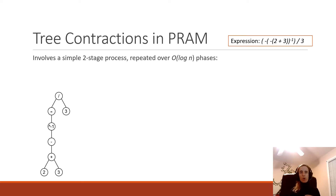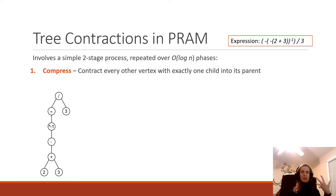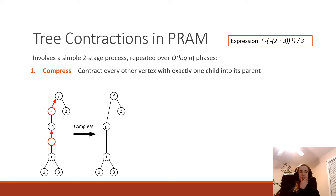Tree contractions run in a number of phases, and each phase consists of two stages. The first stage is compress. In compress, the original algorithm contracts every other vertex with exactly one child into its parent. We have this notion of a chain — a long chain of parents each with one child. We take every other vertex on this chain and contract it into its parent. When we contract two vertices, we store on that vertex the new function that is the composition of those two functions.